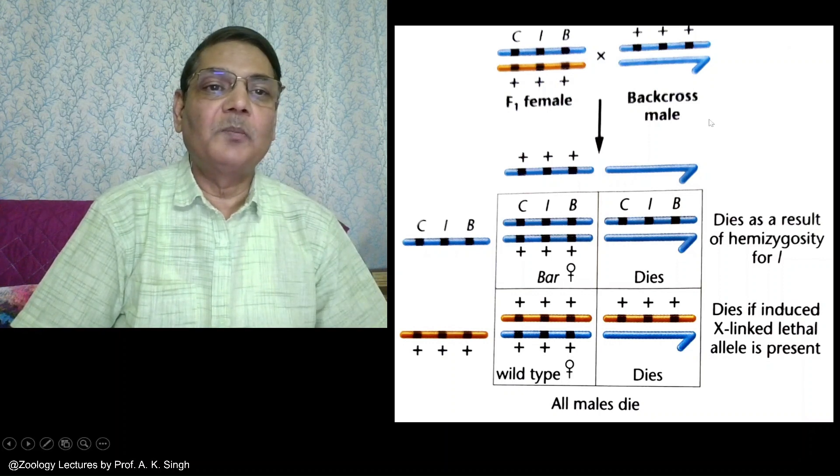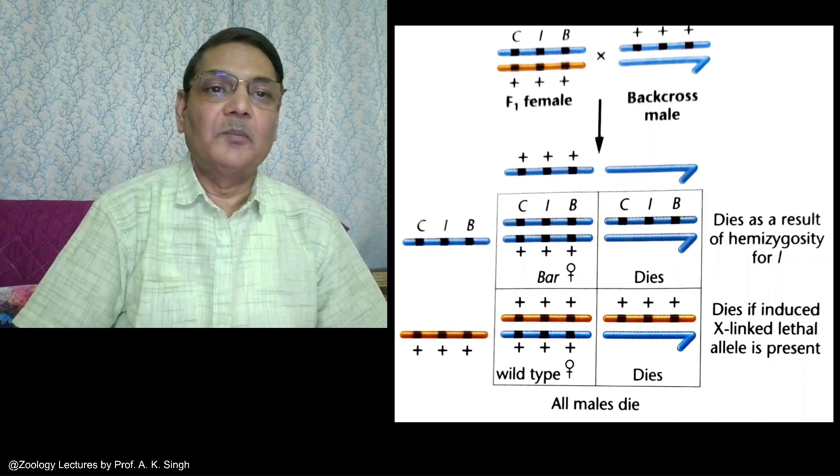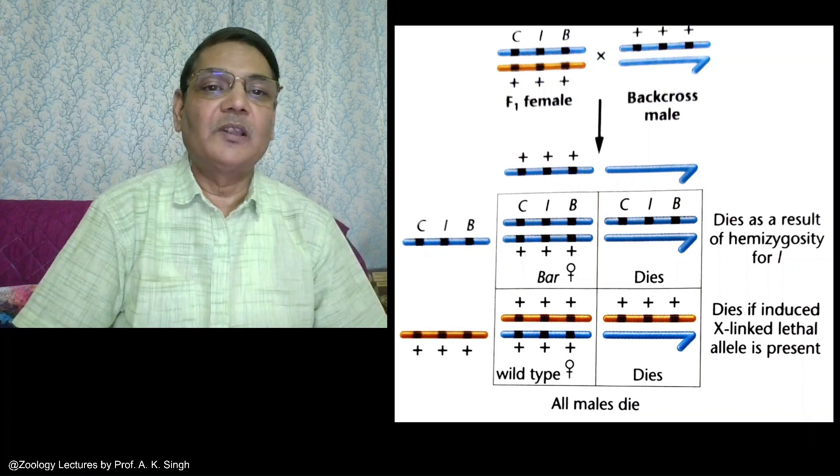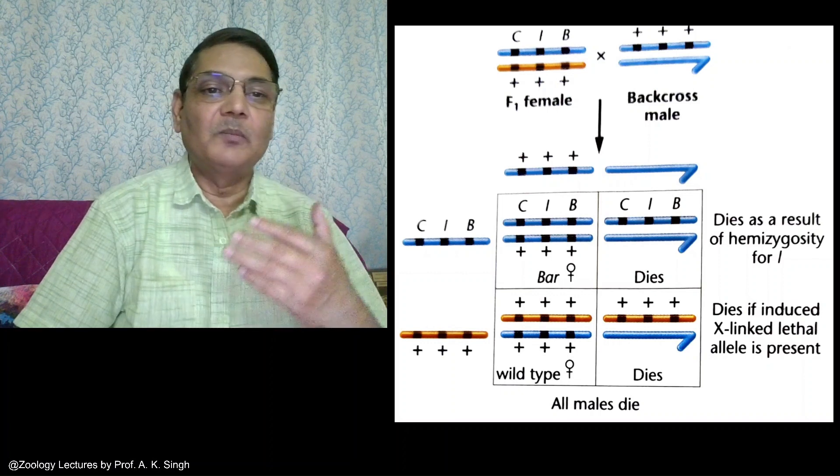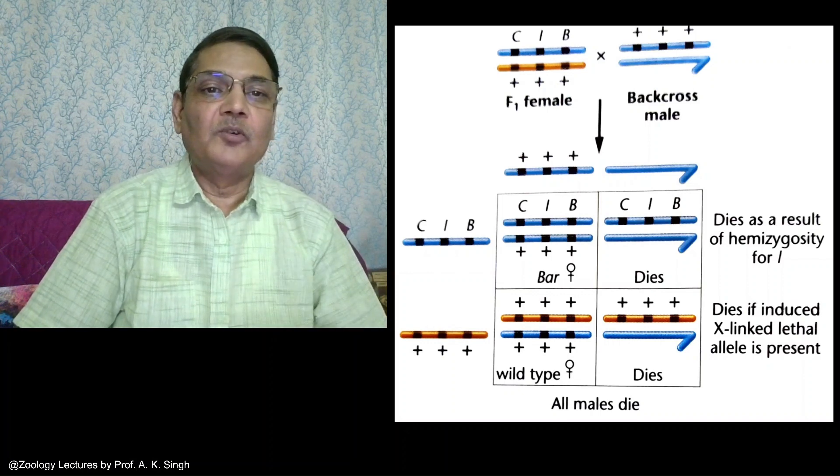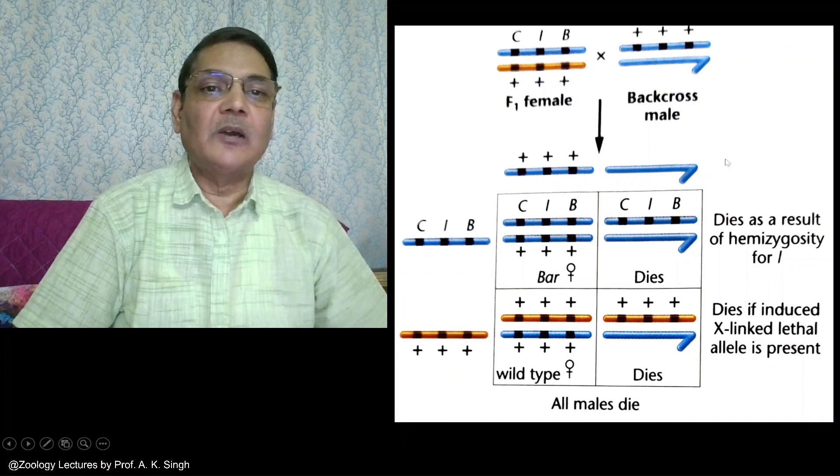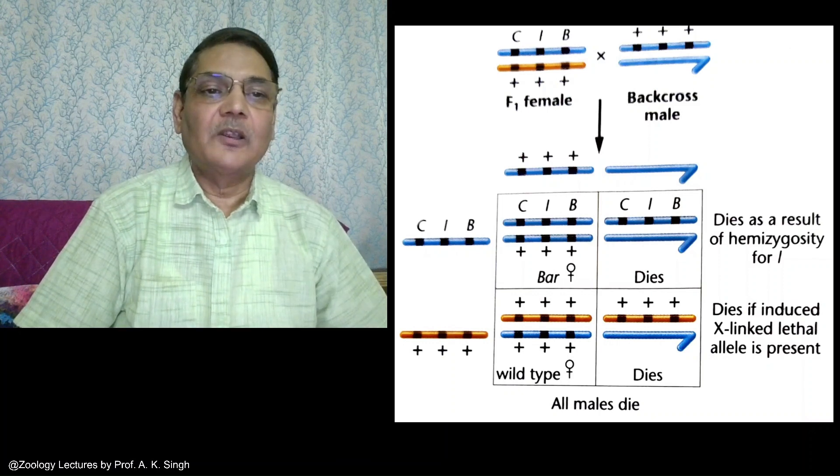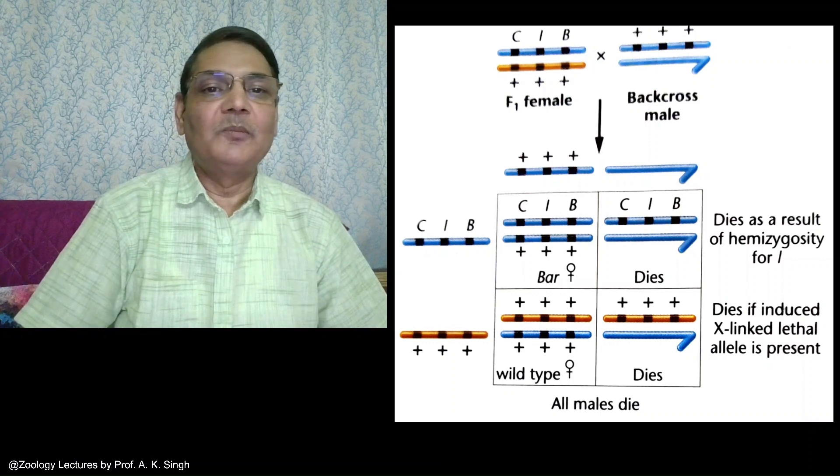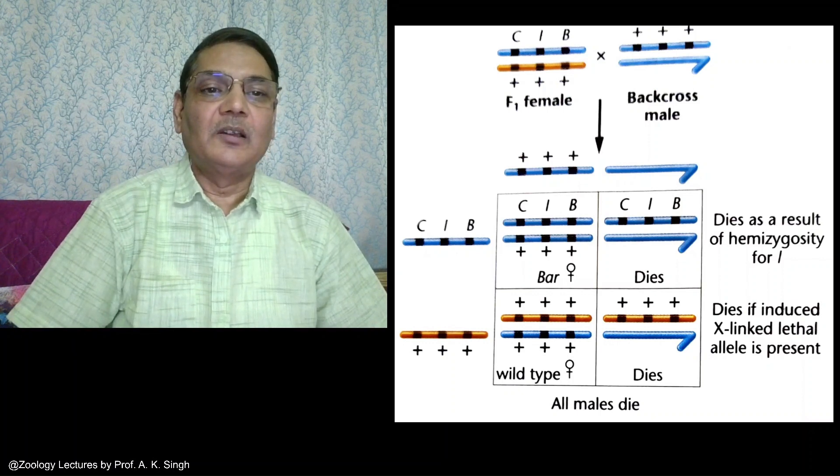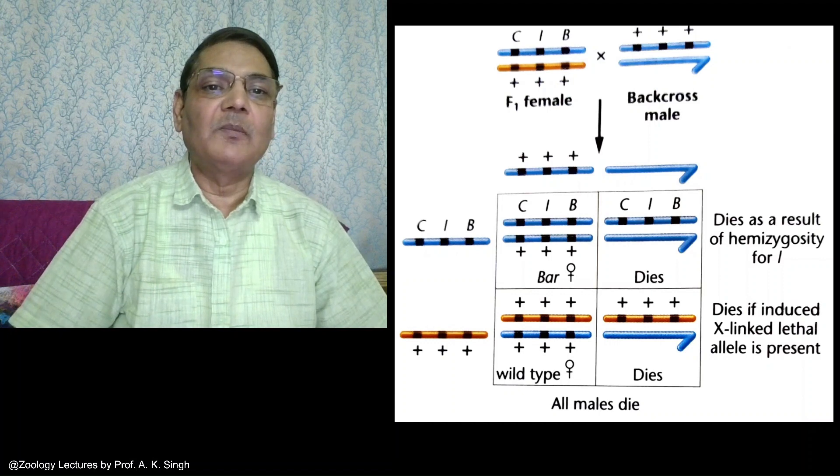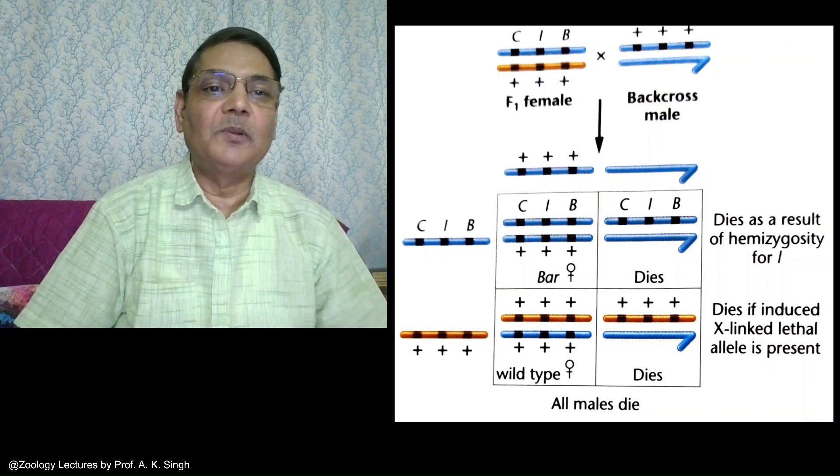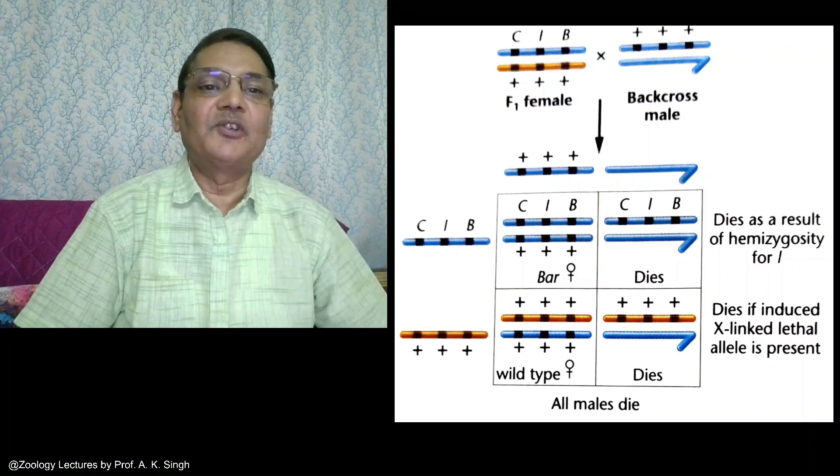Such experiments could be performed with autosomes also, to see whether mutations, particularly lethal mutations, have been created in autosomes or not. But for that, you have to analyze flies of several more generations because homozygosity on autosomes may result after several generations. So those treated males or females, if they have developed a lethal mutation in autosomes, the appearance of a specific phenotype because of that lethality or mutation can be observed after several generations.